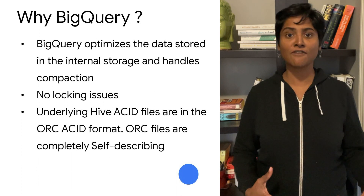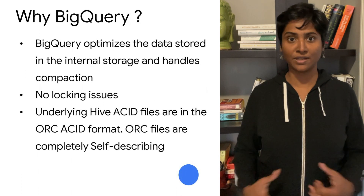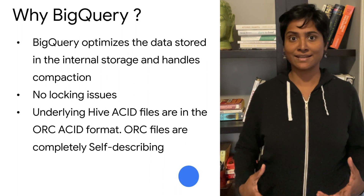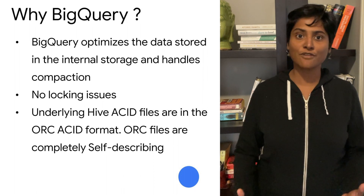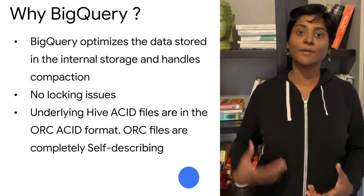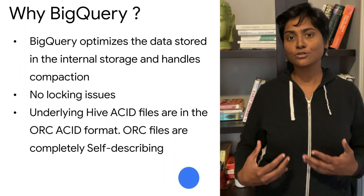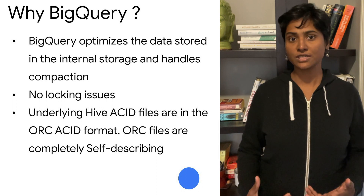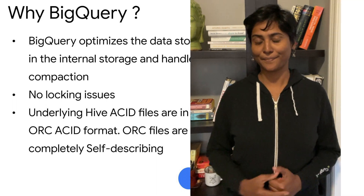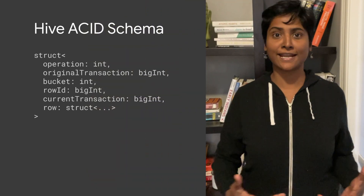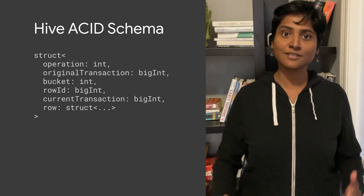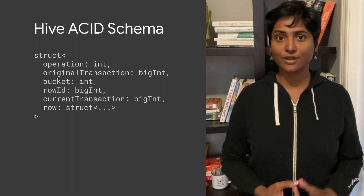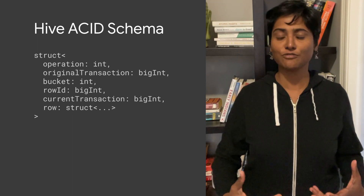As ORC files are completely self-describable, there is no dependency to extract Hive details. BigQuery has an inbuilt schema inference feature that can infer the schema from the ORC file, and it also supports schema evolution without any need for data processing tools to infer the schema. These ORC files in an ACID table are extended with several columns like operation, original transaction, bucket, and row ID to uniquely identify the transactions.